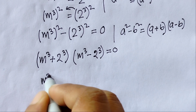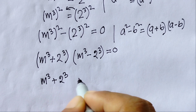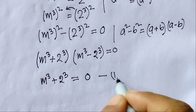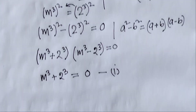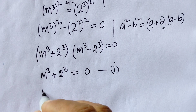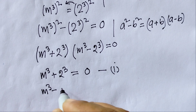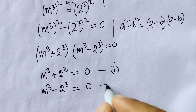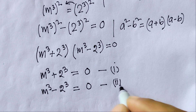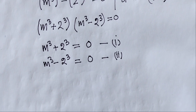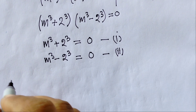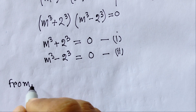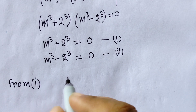We identify the coefficients: a equals 1, b equals 2, and c equals 4. The quadratic formula is m equals negative b plus or minus square root of b squared minus 4ac, all divided by 2a.